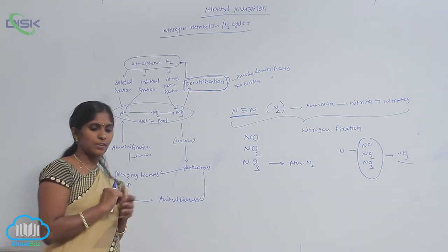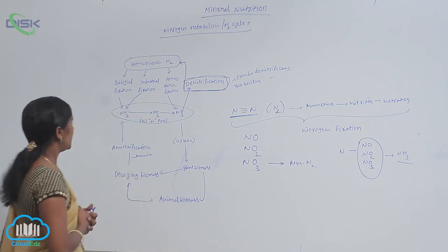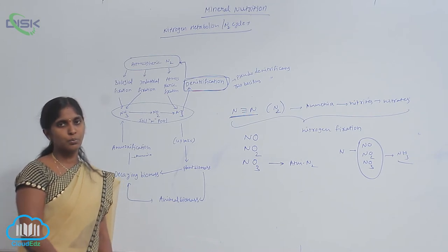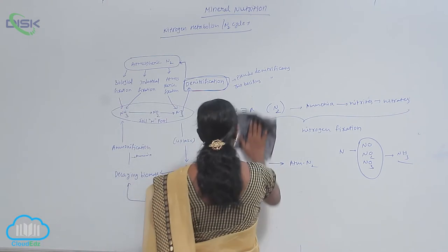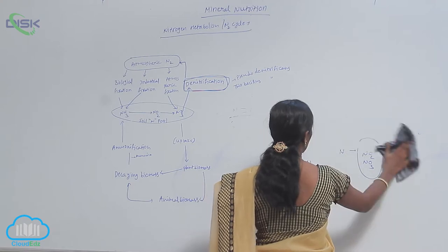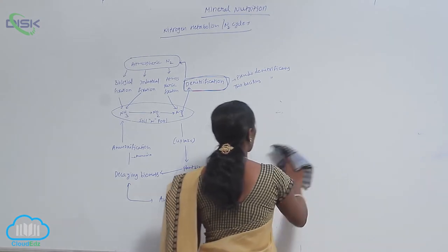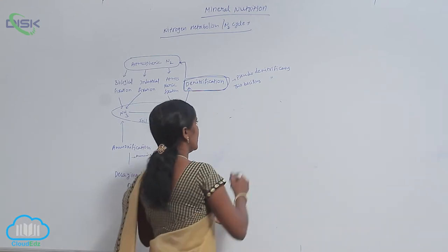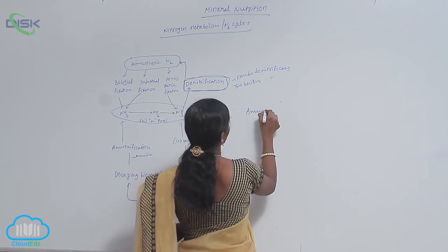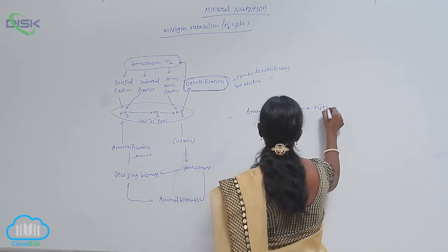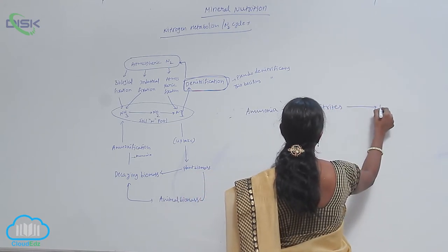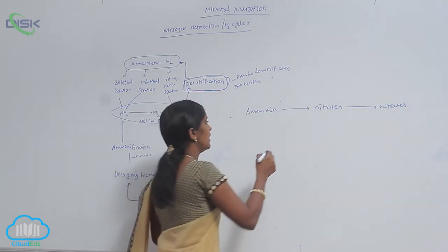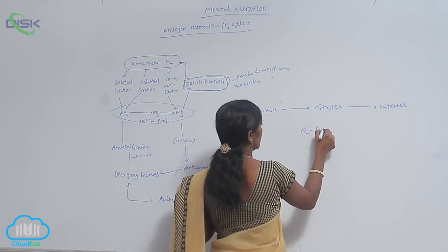Then you come to biological fixation. So during biological fixation, nitrogen fixation happens by using different microbes. What is nitrification? The ammonia which is available in the soil is converted into nitrites as well as nitrates. It means ammonia to nitrites, and nitrites to nitrates. So this is completely called nitrification.